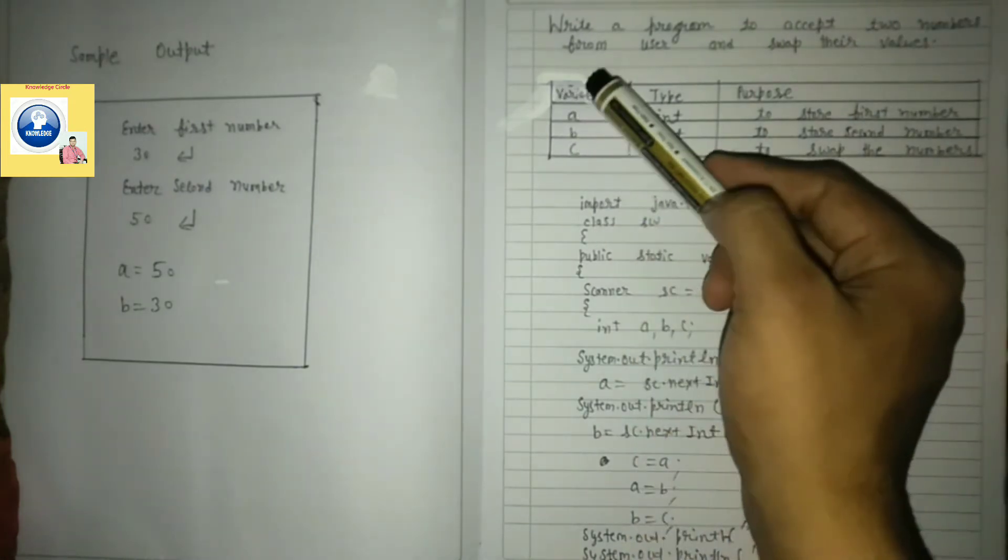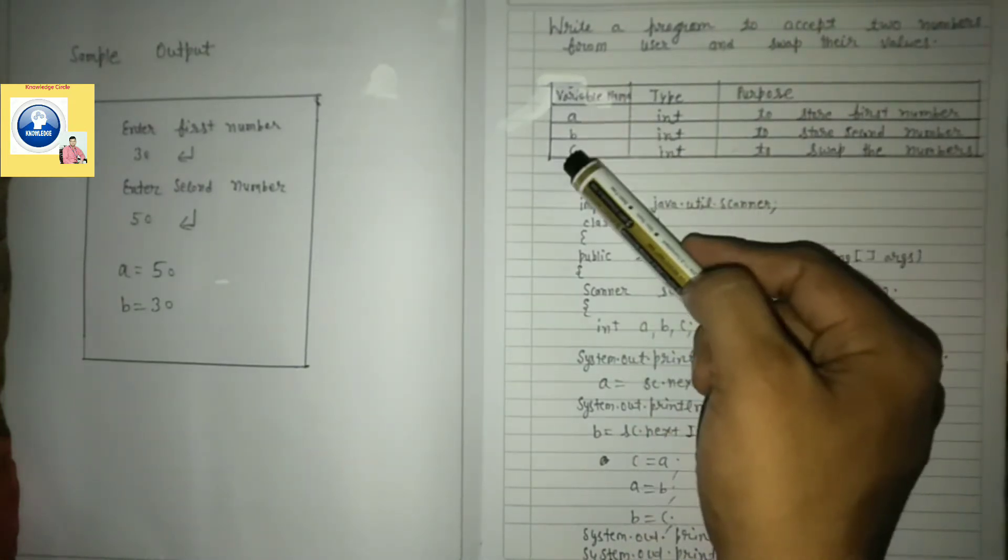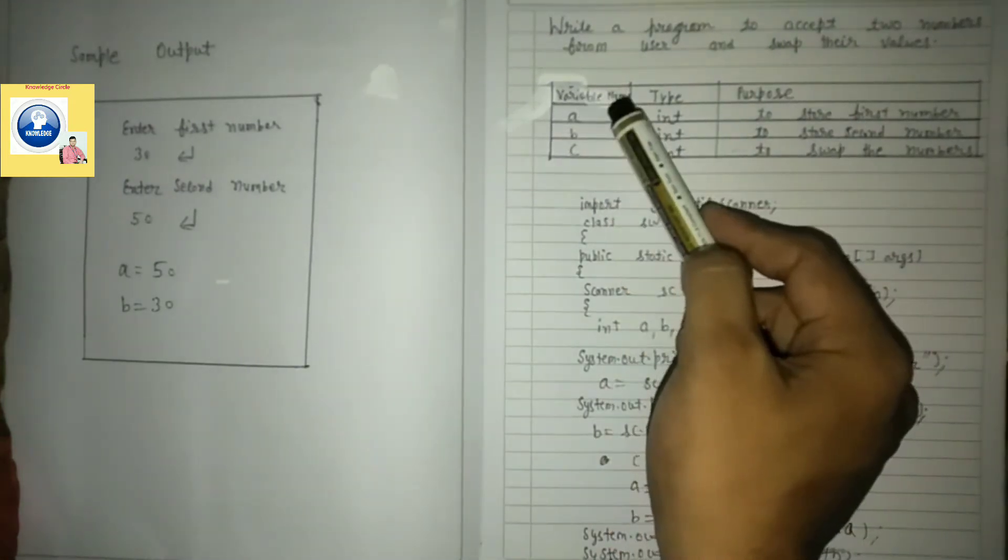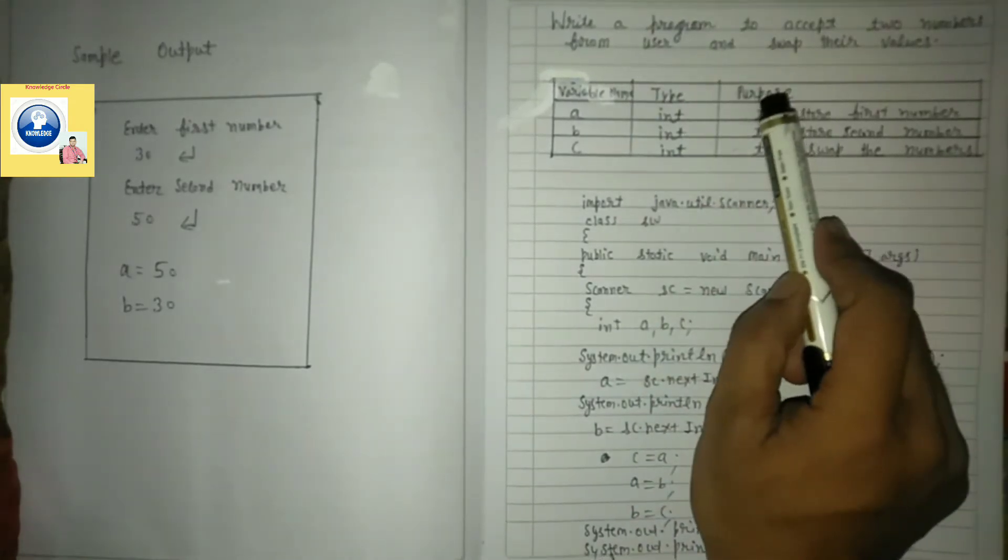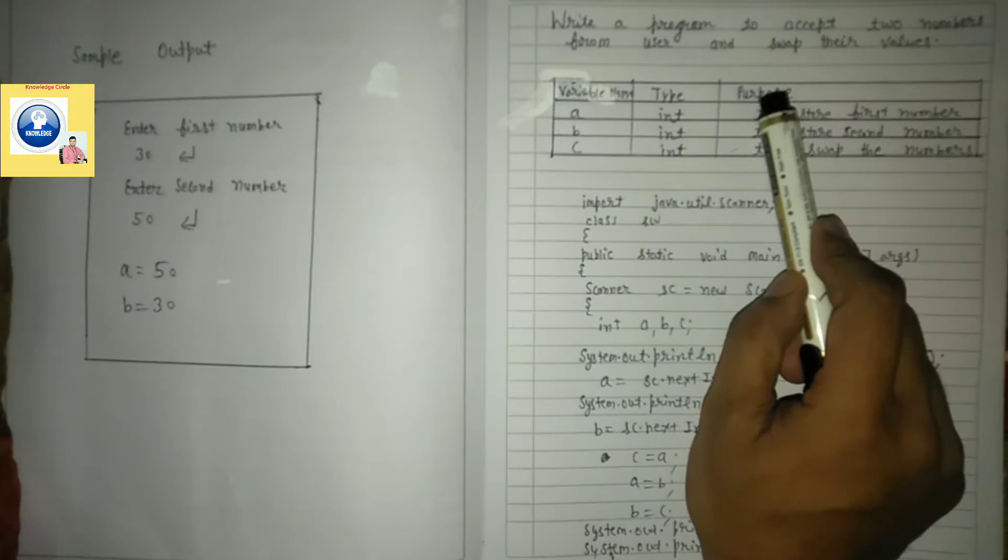In the table, the first column will be variable name, second will be the type of the variable, and the third will be the purpose of variable - why you have declared that variable in your program and what is the use of that.